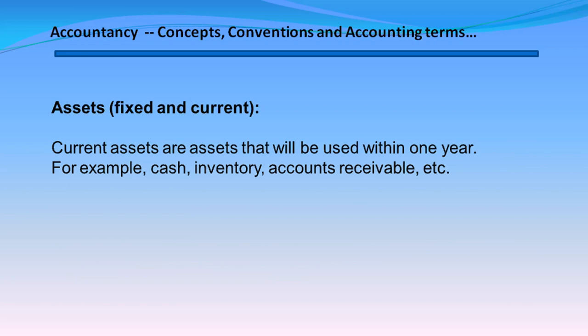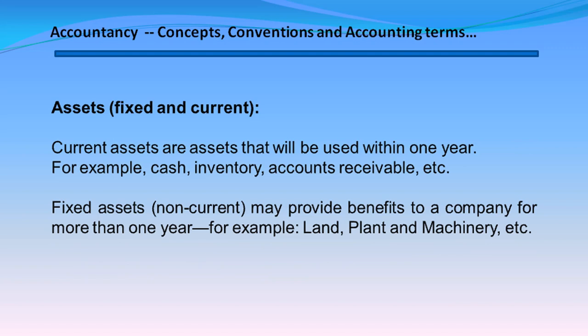Assets — Fixed and Current. Current assets are assets that will be used within one year, e.g., cash, inventory, accounts receivable, etc. Fixed assets, or non-current assets, may provide benefits to a company for more than one year, e.g., land, plant and machinery, etc.